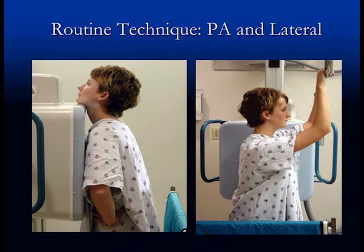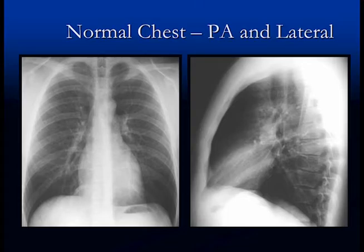The second image on the right is the lateral, showing how we take a lateral film. Her left side is up against what we call the bucky, or the image detector. When we take this film, the x-ray comes from where I'm standing, passes through the patient to hit the detector on the other side. Those are the standard ways that we take a view of the chest.